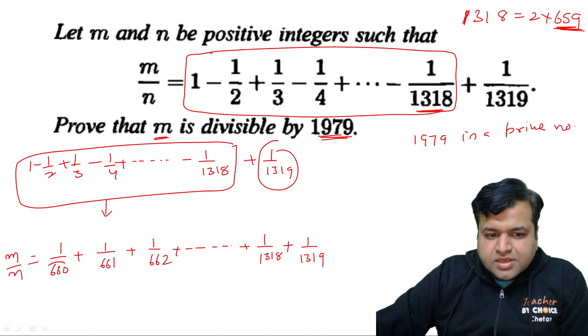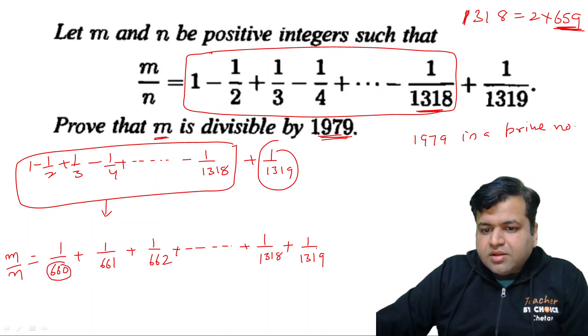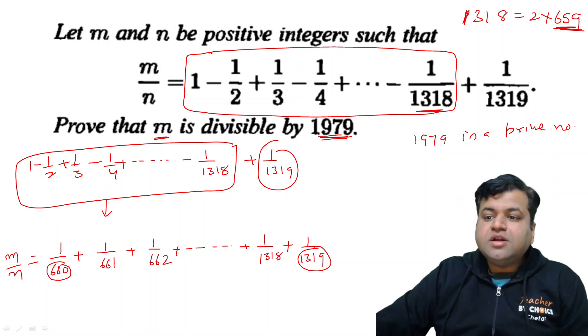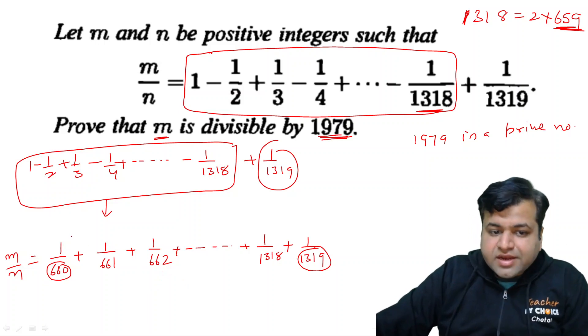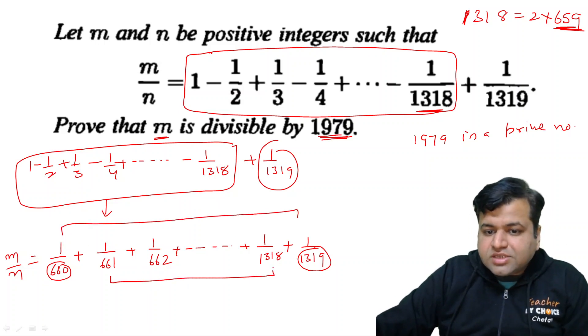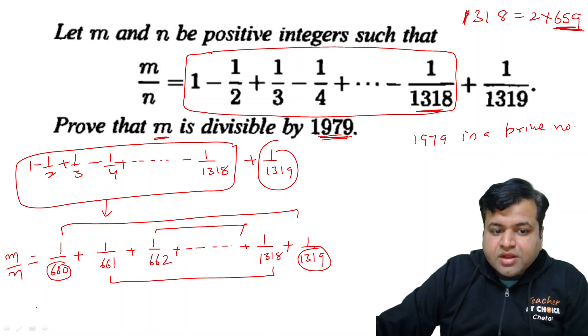And if you can see here, 660 plus 1319. In dono ka sum is nothing but 1979. You can check. In dono ka sum 1979 aata hai. So if we take first term and last term, second plus second last, third plus third last. Agar ham is tariqe se proceed karte hai. So our m by n, that should be equal to 1979 times something.